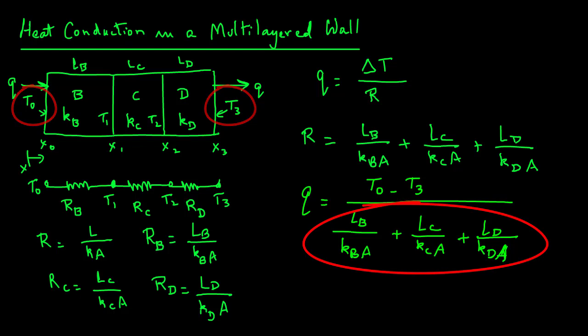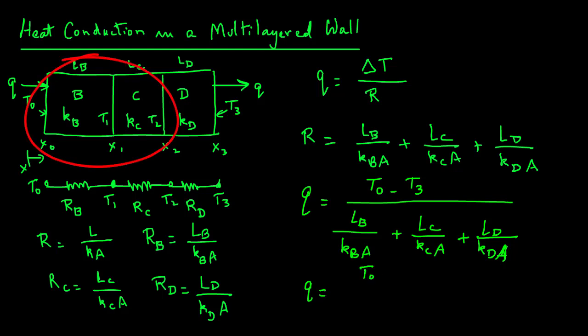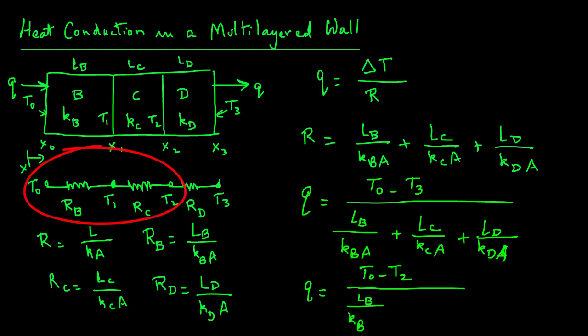Now let's say that you were looking at only the first two layers. Then Q will be, so for the first two layers, the boundary values will be T0 minus T2 because those will be the two temperatures. But now we will use only the first two resistance terms: LB over KB A plus LC over KC A.